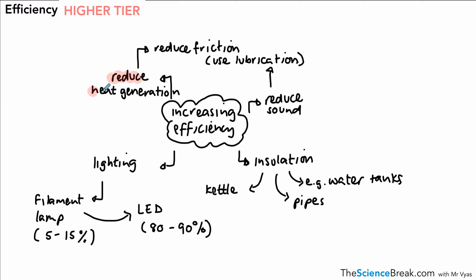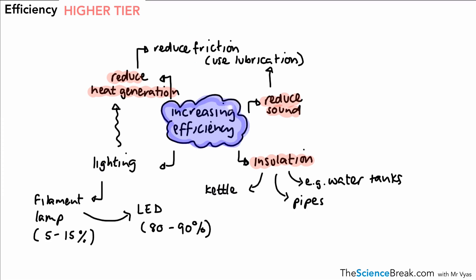So we can change bulbs to increase the efficiency of a lighting system. To summarize, the ways to increase efficiency are: reduction of heat energy, reduction of sound, insulation, and improving lighting — which often comes down to reducing heat generation. That's the idea behind efficiency, the equations you need to know — and remember, these won't be given to you on the equation sheet. Thank you for watching; I'll see you in the next one.